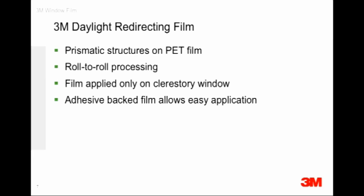We want to use a film-based solution — something that is very easy to make and easy to apply. Being 3M, everything is in roll form, so roll-to-roll processing is important and will eventually lead to a more cost-effective product that can be retrofitted. The film has an adhesive on the back side so that it can be stuck to the window.